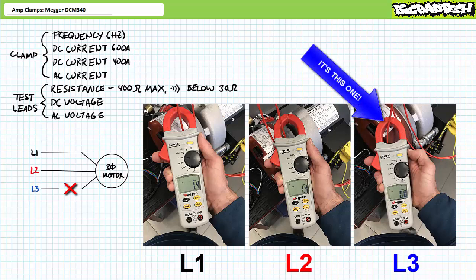Amp clamps make the discovery of the lost phase a very simple task. Lock it out, tag it out, and fix the problem.